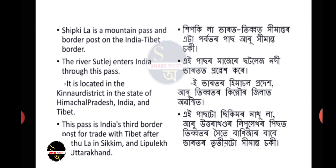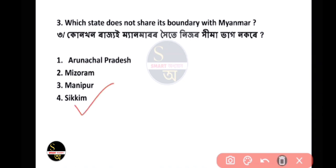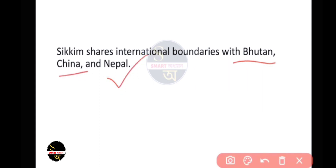Question No. 3: Which state does not share its boundary with Myanmar? The answer is Sikkim. Sikkim does not share an international boundary with Myanmar. Instead, Sikkim shares its international boundaries with China, Nepal, and Bhutan — three countries.